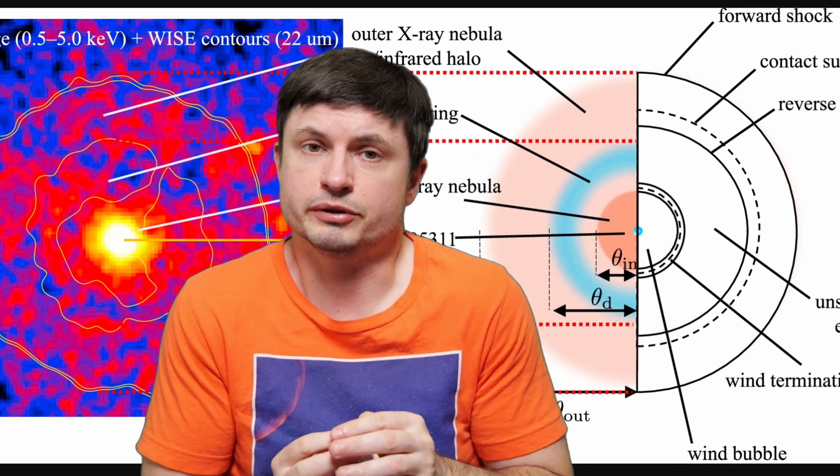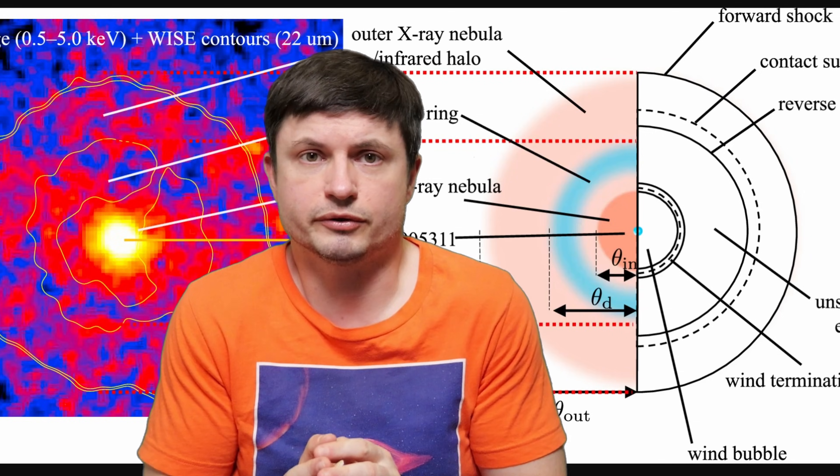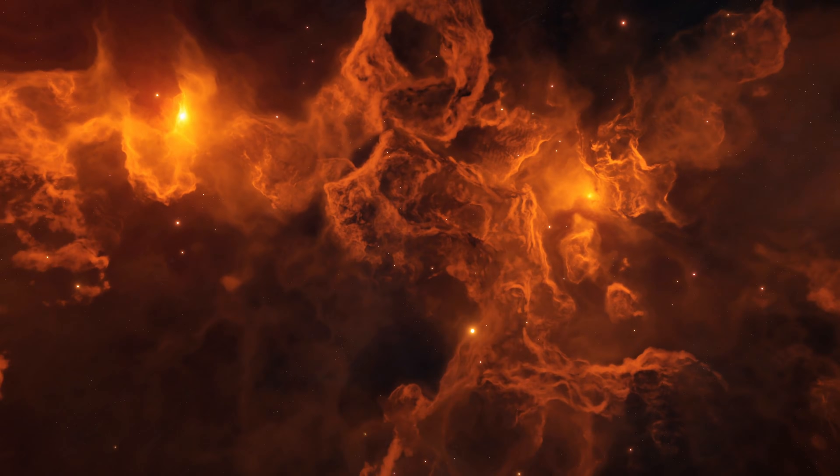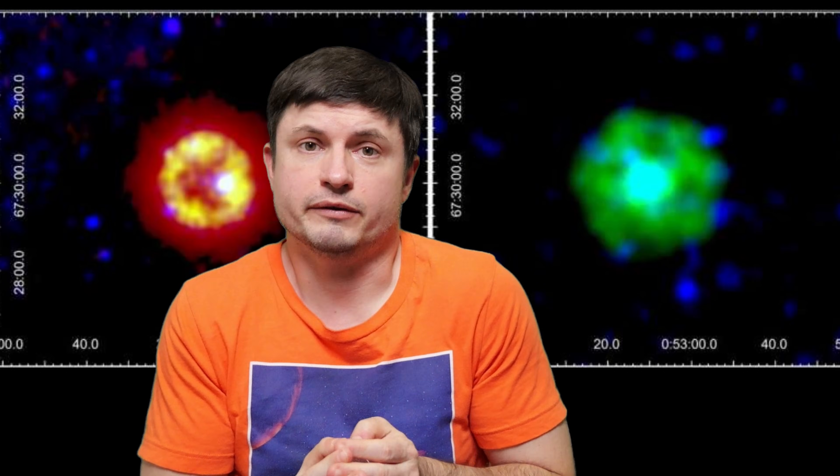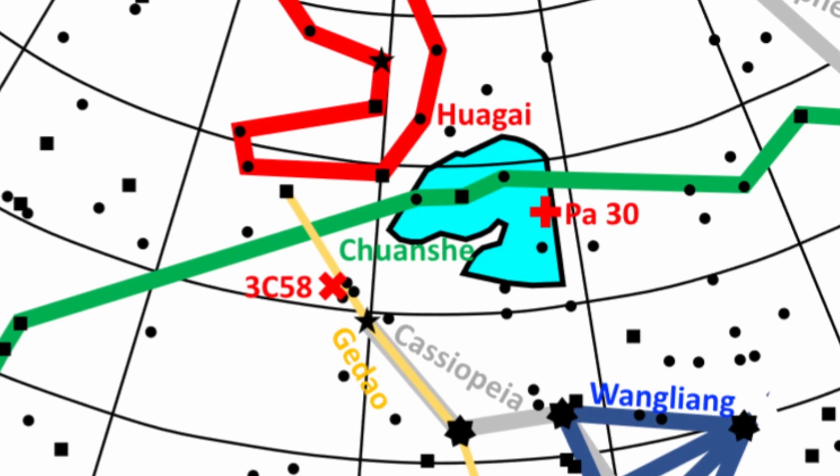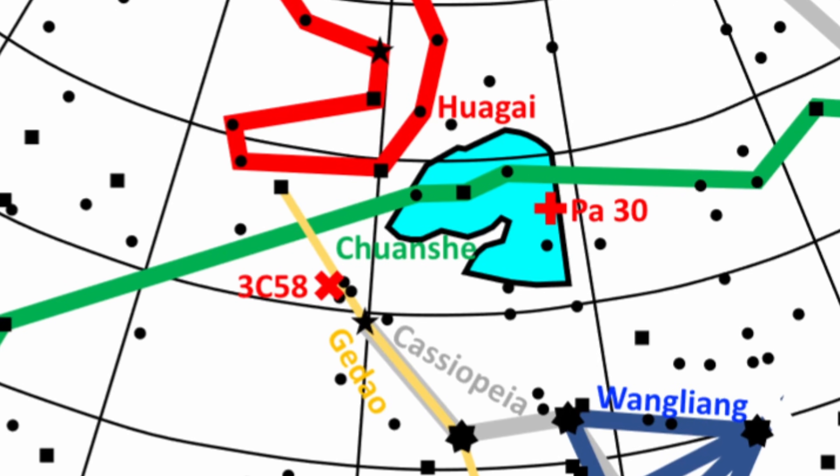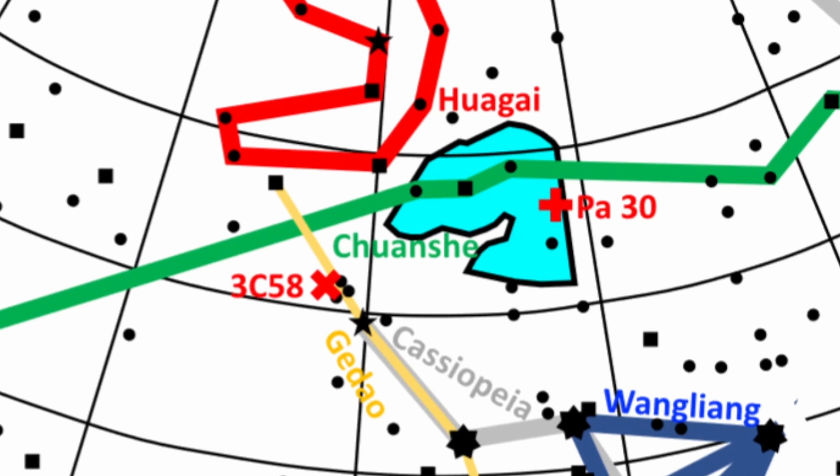And no planetary nebula can produce something so ridiculously powerful. But by basically calculating the velocity and trying to trace back when all of this started it turned out to be approximately 850 years old. And because it was in a very similar location to that reported guest star it now made a lot of sense that this is exactly what the Chinese astrologists were actually looking at.